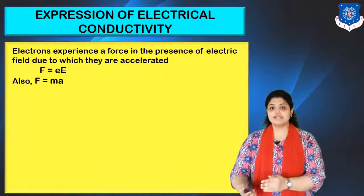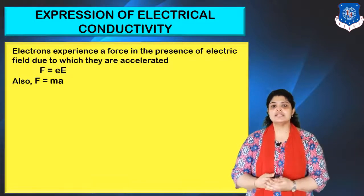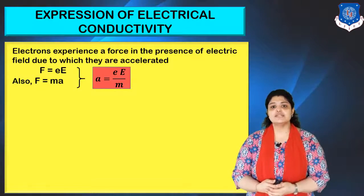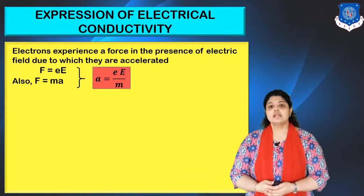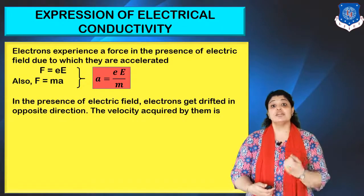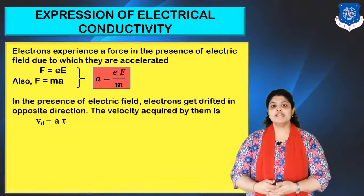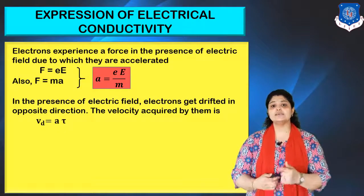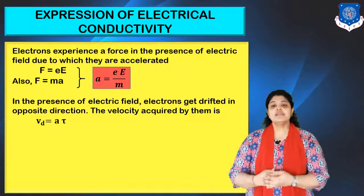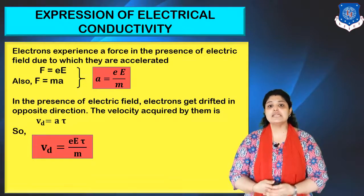Electrons are drifted in the opposite direction. According to Newton's law, the force experienced by electrons equals M times A. Comparing these two equations, the acceleration of electrons equals eE/M. In the presence of an electric field, when electrons get drifted, the velocity acquired by them — which we call drift velocity — is given by Vd = A × τ, where τ is the mean collision time. Substituting the value of acceleration, drift velocity equals eEτ/M.